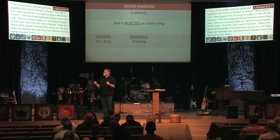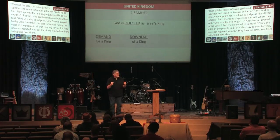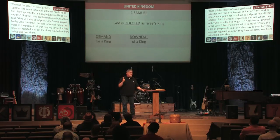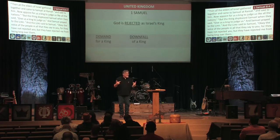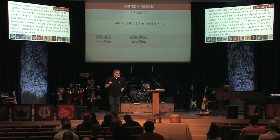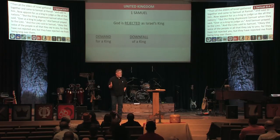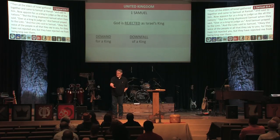Saul is not able to trust God. Two different times — once at Gilgal in chapter 13, and once in chapter 15 with the Amalekites — Saul refuses to obey and trust God with the circumstances he faces. So Samuel comes to him and says, 'Because of your sin and your unwillingness to obey and trust God, God is going to remove this kingdom from you and give it to another who is more worthy.'